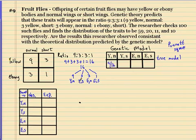If we had 16, for every 16, 3 of them should be yellow and short, so that would be 3 over 16. We expect 3 out of 16 ebony and normal, and 1 out of 16 ebony and short. So this is my hypothesized model.